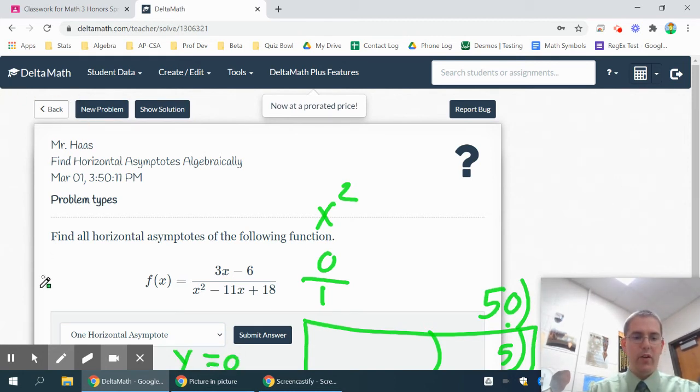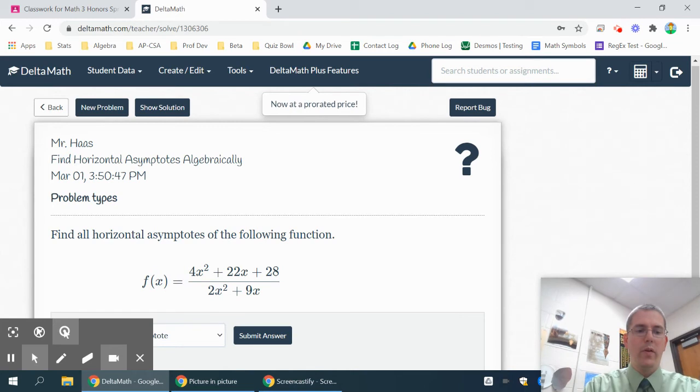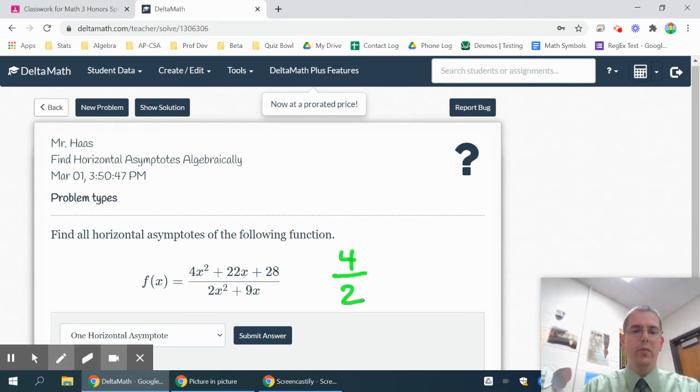We'll go ahead and try another one. On this one, my highest power of x is x squared, so I have 4x squareds on top and 2x squareds on the bottom. So 4 over 2 would give me a horizontal asymptote of y equals 2, just one horizontal asymptote.